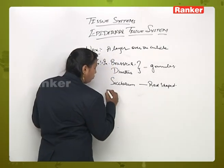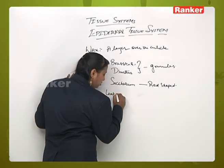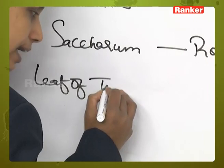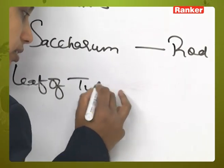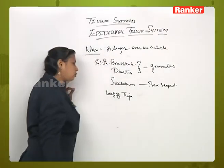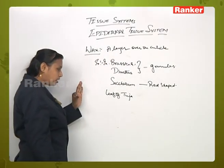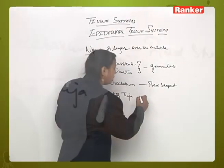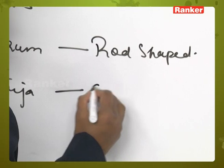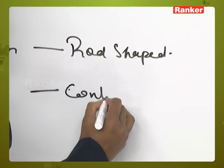In the leaf of tuja, a plant named tuja, in its leaf the wax layer is in the form of a continuous layer.